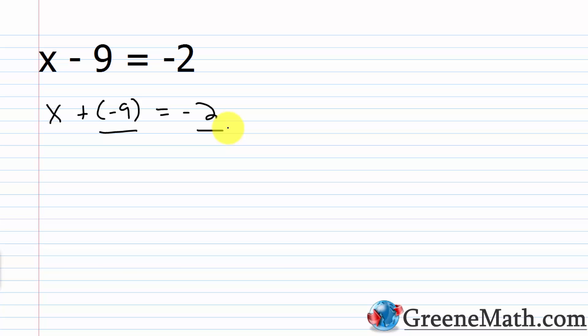We solve it in one step using the addition property of equality. The addition property of equality tells us that we can add — or also subtract — the same number to both sides of an equation without changing the solution. That's the key: as I go through the steps to solve an equation, I need my solution to stay the same. I can add the same number to both sides and it doesn't change the solution.